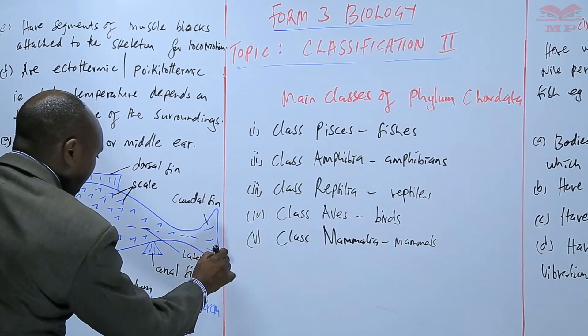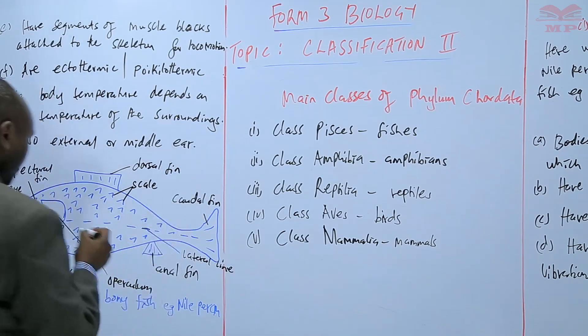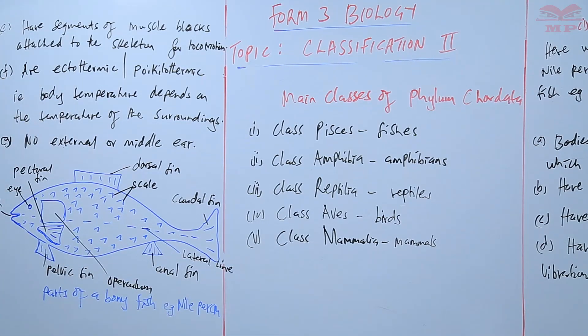The one that runs through the center, that is the lateral line. We have the operculum that covers the gills and prevents them from being damaged mechanically.